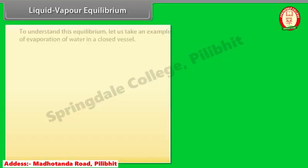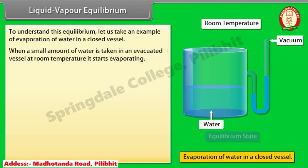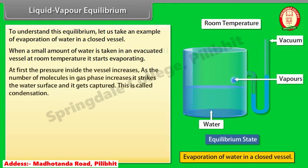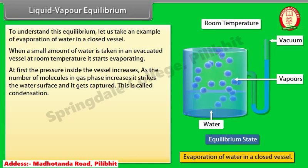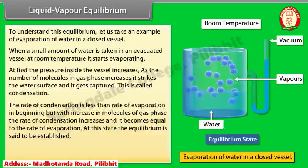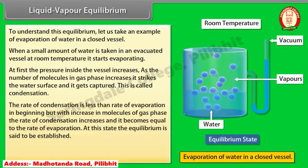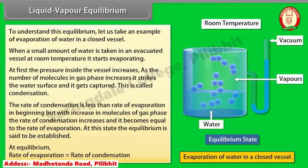Liquid-Vapor Equilibrium. To understand this equilibrium, consider the evaporation of water in a closed vessel. When a small amount of water is taken in an evacuated vessel at room temperature, it starts evaporating. At first, the pressure inside the vessel increases. As the number of molecules in the gas phase increases, they strike the water surface and get captured — this is called condensation. The rate of condensation is less than the rate of evaporation in the beginning, but with an increase in gas-phase molecules, the rate of condensation increases and becomes equal to the rate of evaporation. At this state, equilibrium is said to be established. Thus, at equilibrium, the rate of evaporation is equal to the rate of condensation.